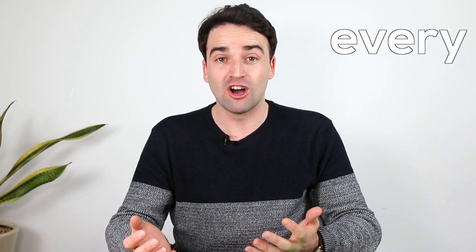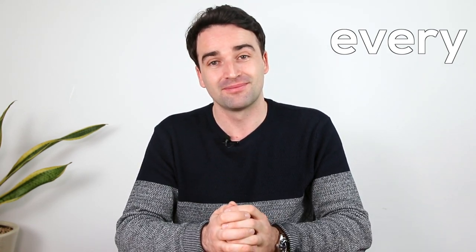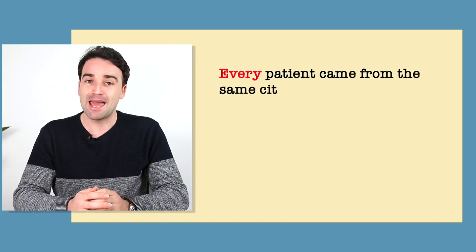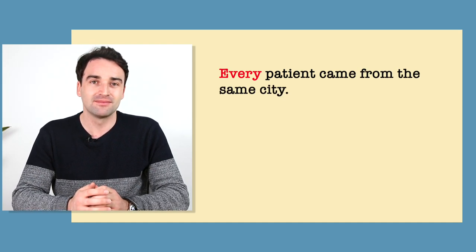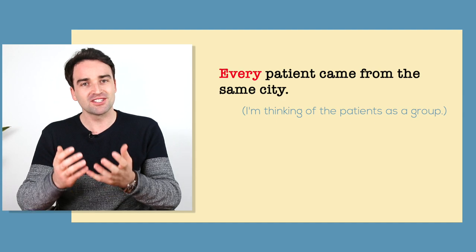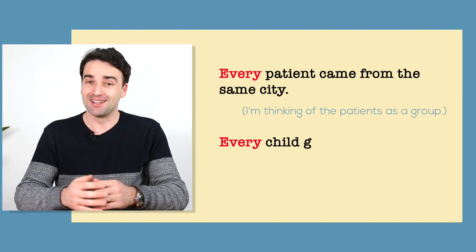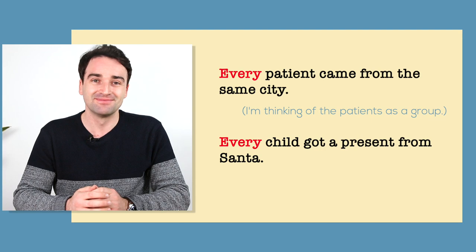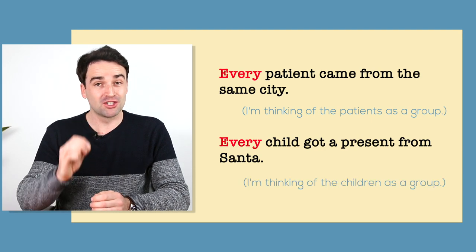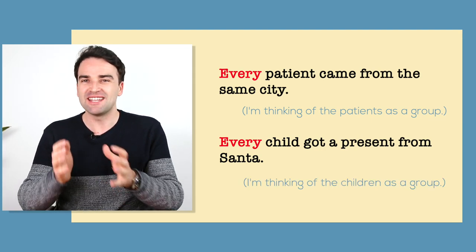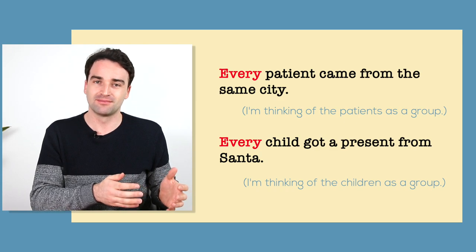'Every' is more common when we're thinking of people or things together as a group or as a collective. 'Every patient came from the same city' — I'm thinking of the patients as a group. 'Every child got a present from Santa.' Again, I'm thinking of the children as a group, not individual children. So the main difference is all to do with whether you think of something as individual things or as a group.